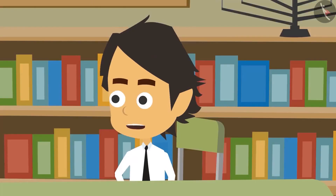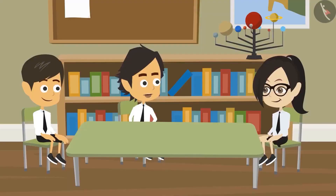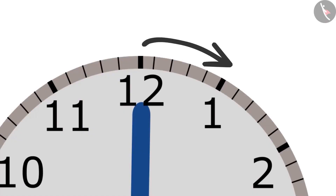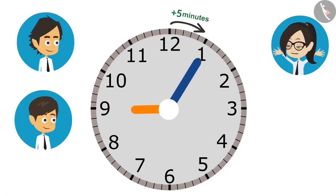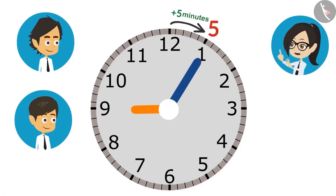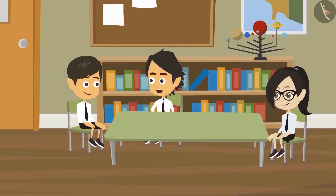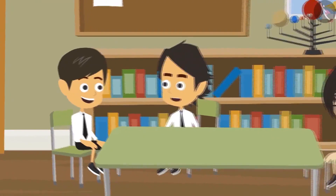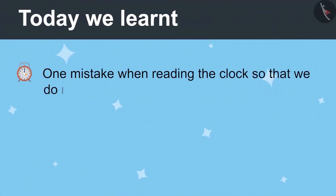How to read the correct time? The numbers written in the clock show the hours and not the minutes. The minute hand takes 5 minutes to go from one number to another. That's why when the minute hand moves from 12 to 1, it is not 1 minute but 5 minutes. Just like that, when the minute hand reaches 2 from 12, it has been 10 minutes. This means it takes 10 minutes from home to reach school.